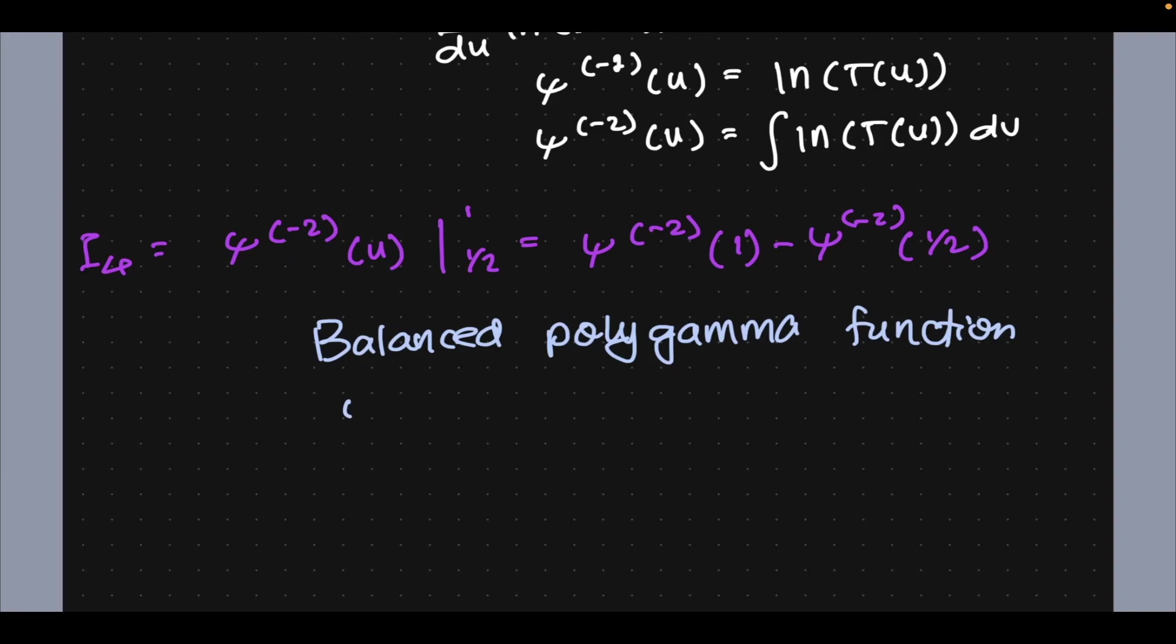So the m-th derivative of gamma of z, well just write that, which is also the (m+1)-th derivative, or maybe we should use z here, of natural log of gamma of z.